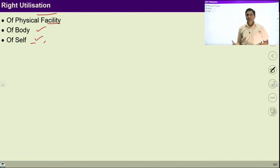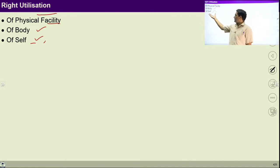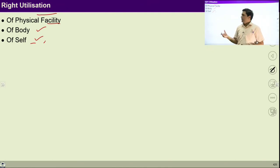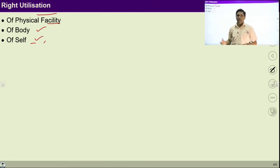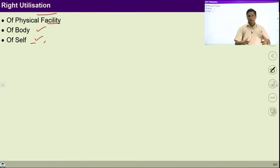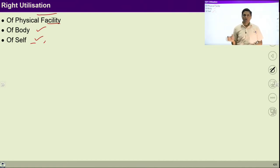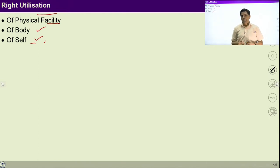As resources, these three things are available to us. As a human being, I am a coexistence of self and body — each human being is a coexistence of self and body. Right utilization of self is required, right utilization of body is required, and right utilization of physical facilities which are available around us is also required. If we ensure right utilization of these three natural resources, then a peaceful harmony can be ensured.